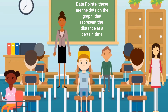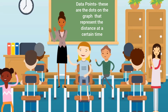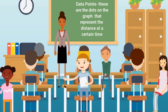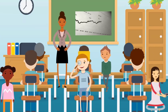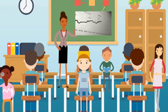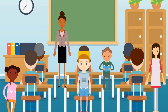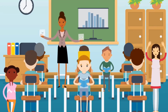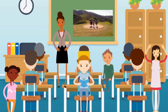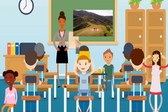Next, we have data points. These are the dots on the graph that represent the distance at a certain time. We plot a point every time we measure the distance. The line connects all the data points and shows the movement over time, showing whether someone is walking faster or slower.